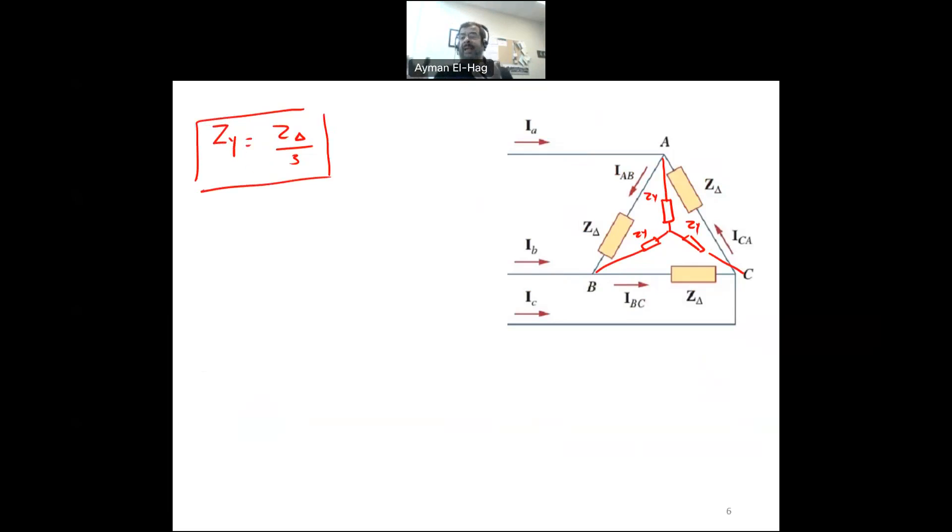So this is the relationship between Z-Y and Z-delta. So again, if the delta connection is at the load side, convert the load back to Y-connection and then go to the Y-Y-connection. If both the source and the load are delta connection, then change the source and change the load.